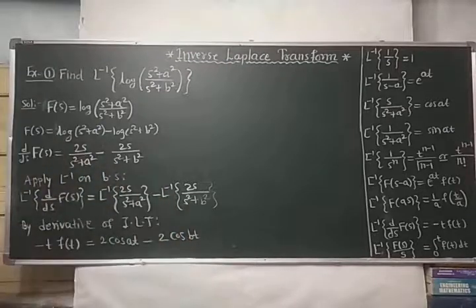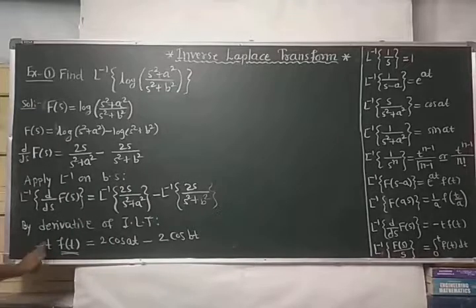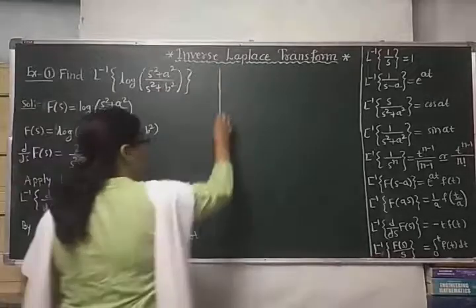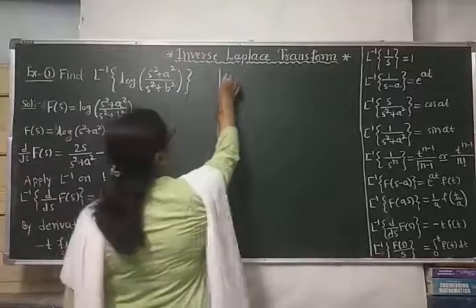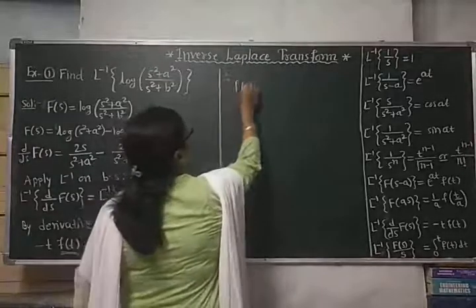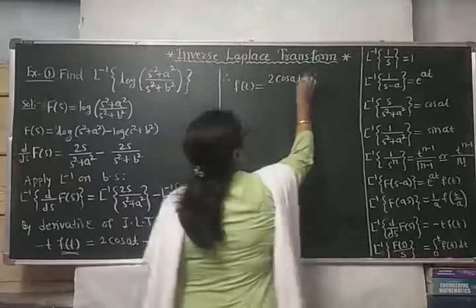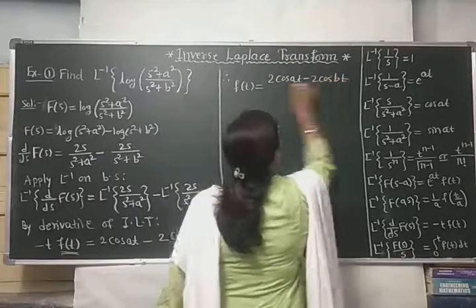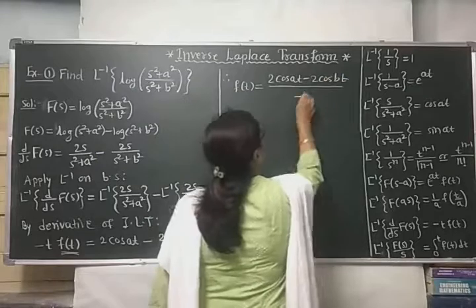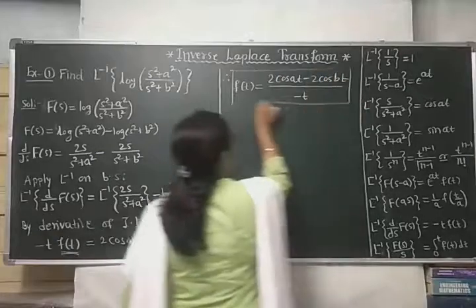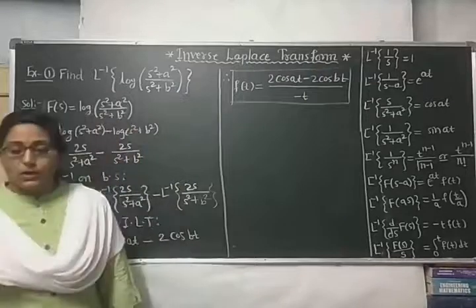Our aim is to find f(t). Shifting the −t to the right side, the required Laplace inverse is f(t) = [2cos(at) − 2cos(bt)] / (−t). This is the required inverse Laplace transform.